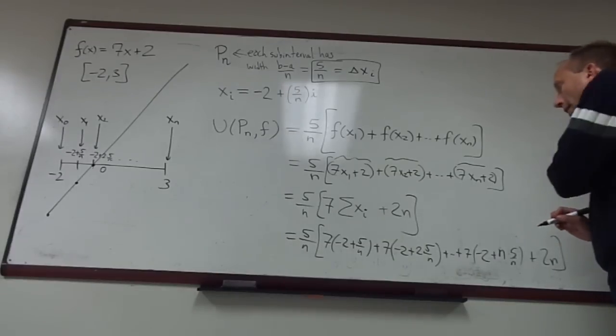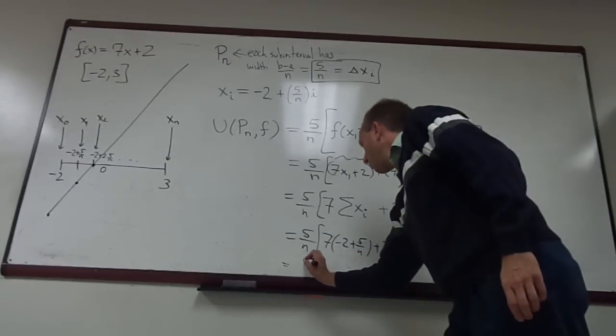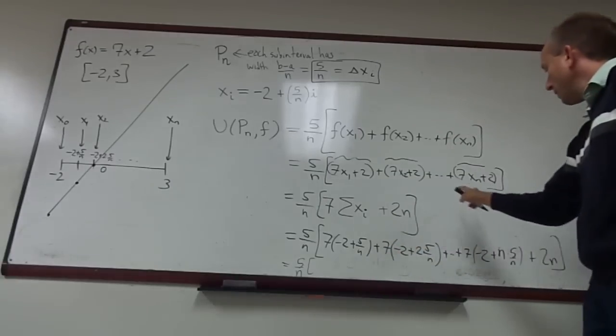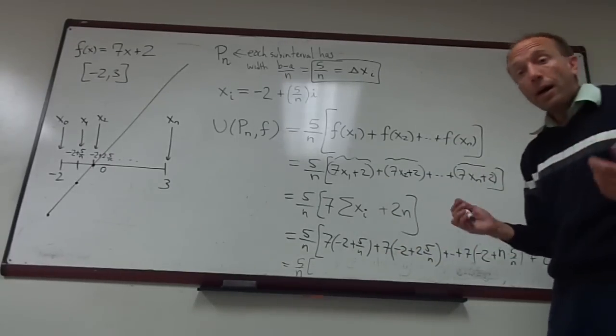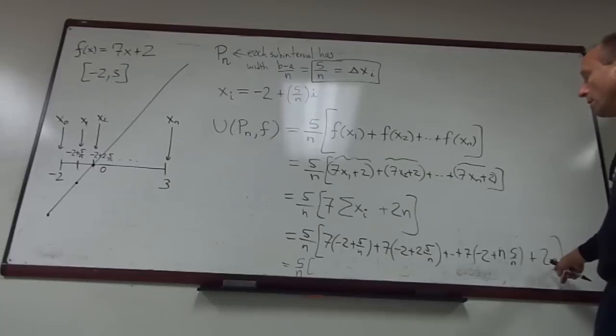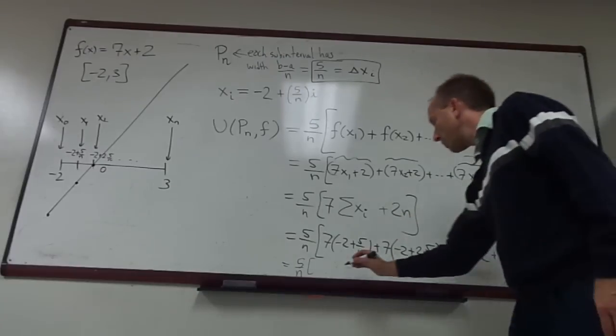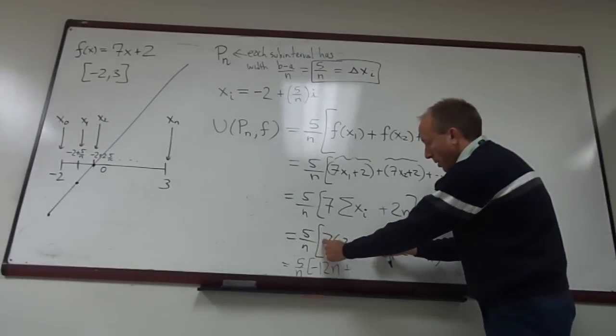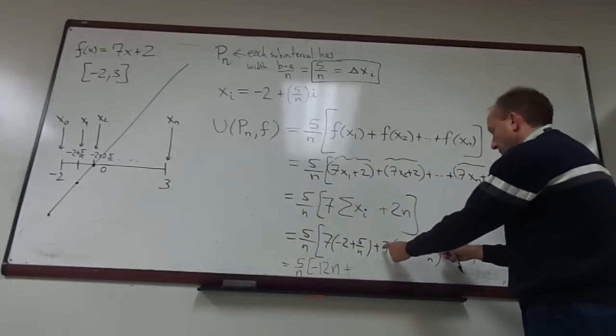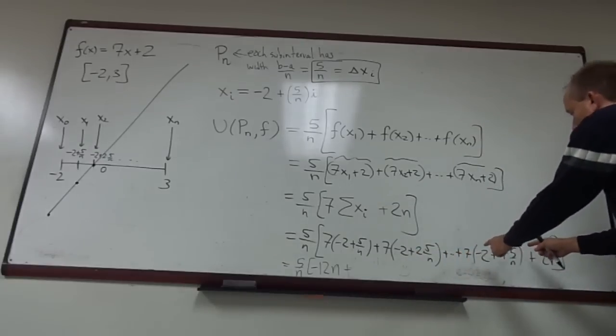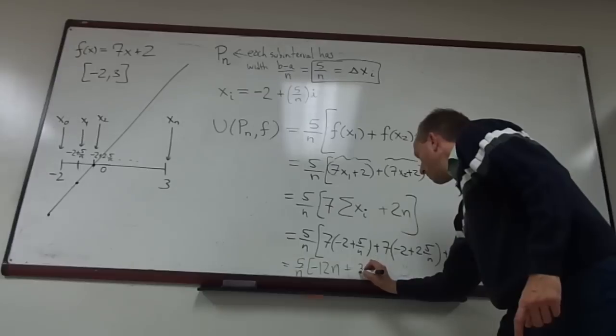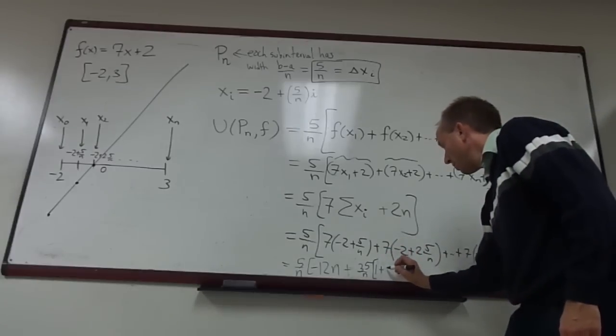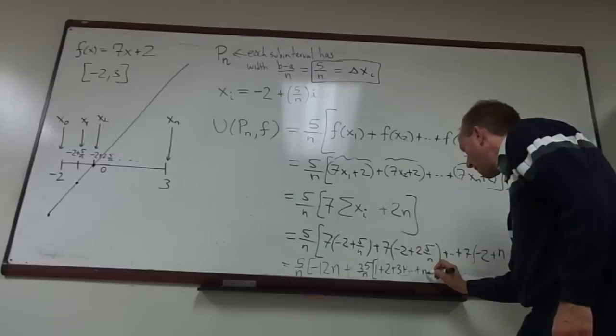So if you actually work that out, I have 5 over n, and this is actually negative 14, negative 14, and so on, negative 14 n times, and then plus 2n. So it's negative 14n plus 2n, which is negative 12n. And then as far as the second part, this is 35 over n, this is 35 times 2 over n, and so on. This is 35 times n over n. So it's 35 over n times the sum of the first n positive integers.